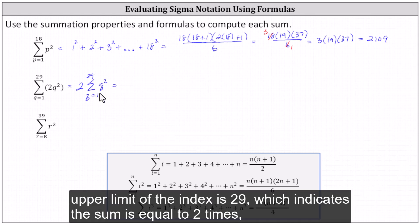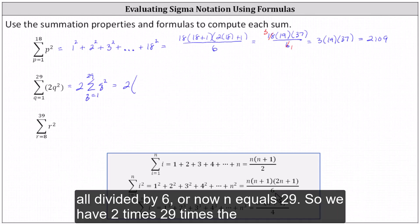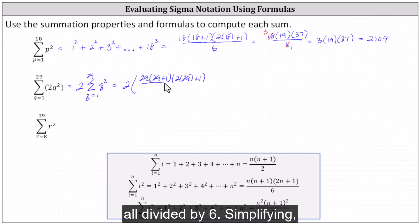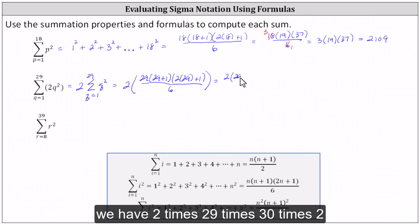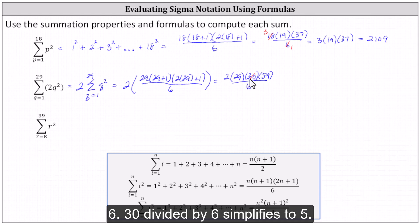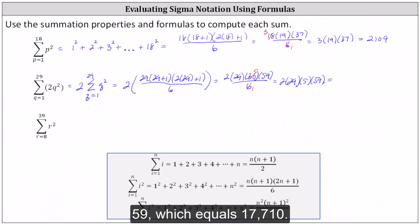Focusing on the summation notation, n, the upper limit of the index, is 29. We'll use the same formula as the first example: n times (n plus 1) times (2n plus 1) all divided by 6, where now n equals 29. So we have 2 times 29 times 30 times 59, all divided by 6. Since 30 divided by 6 simplifies to 5, the sum equals 2 times 29 times 5 times 59, which equals 17,710.